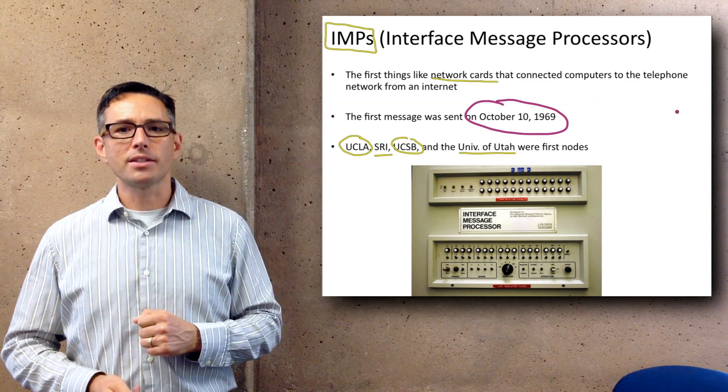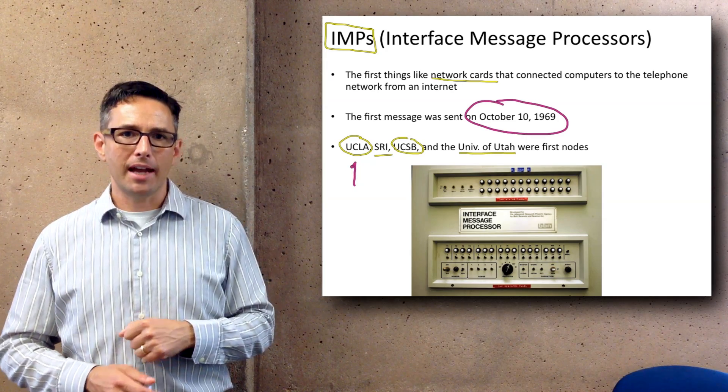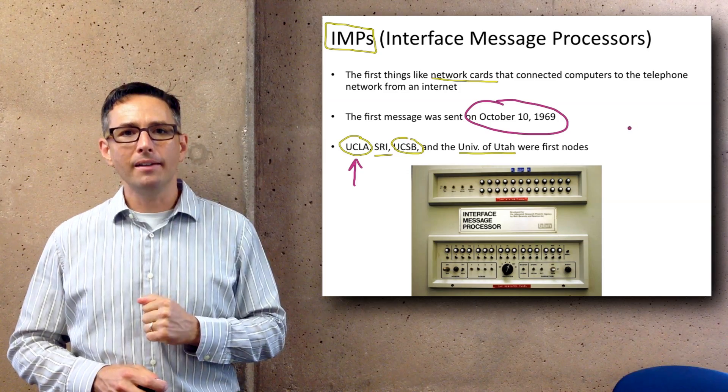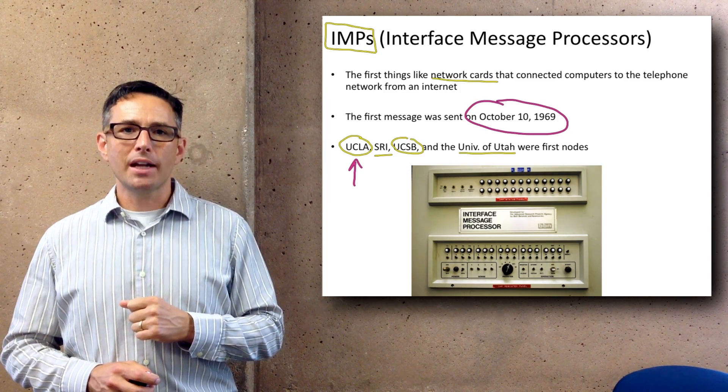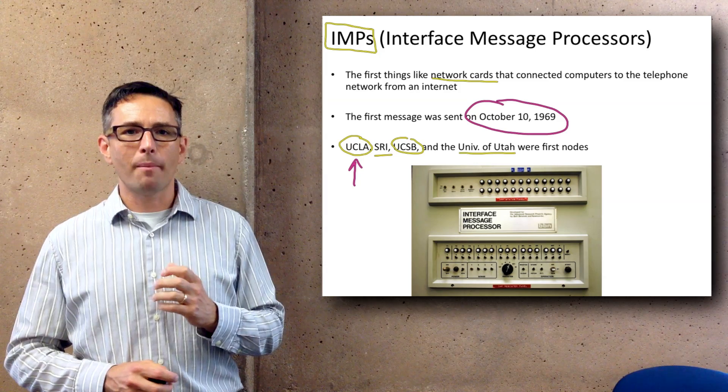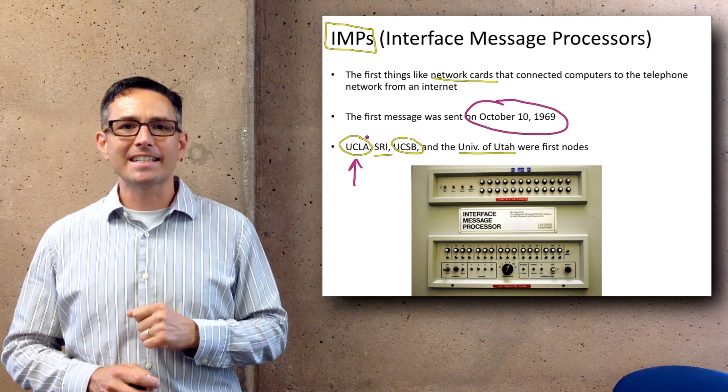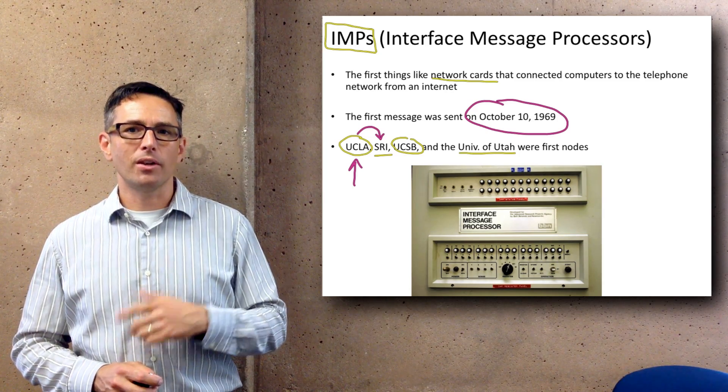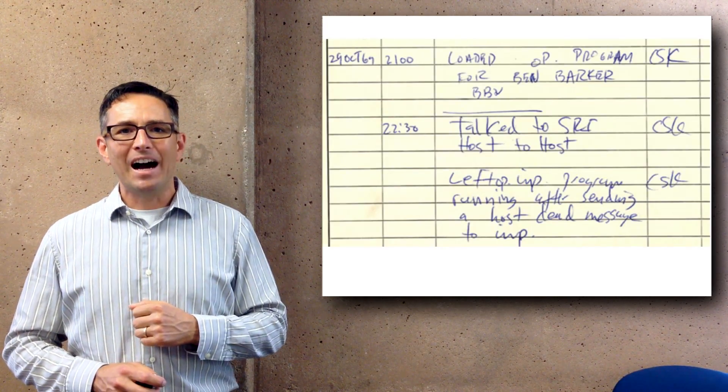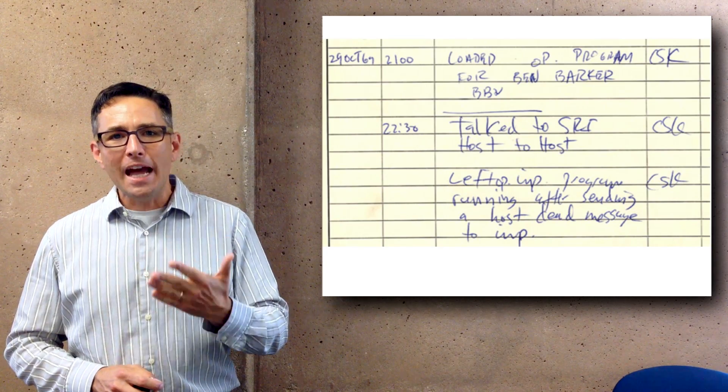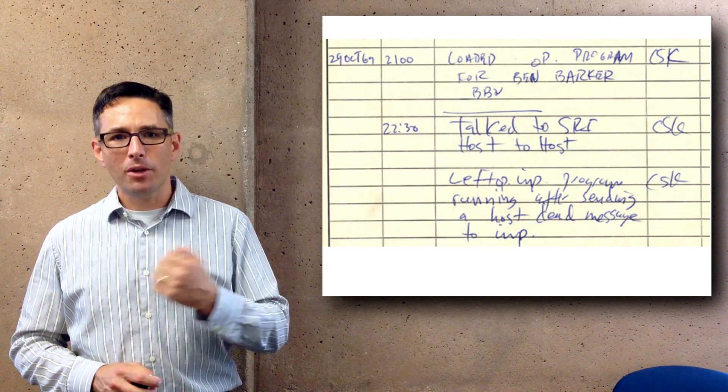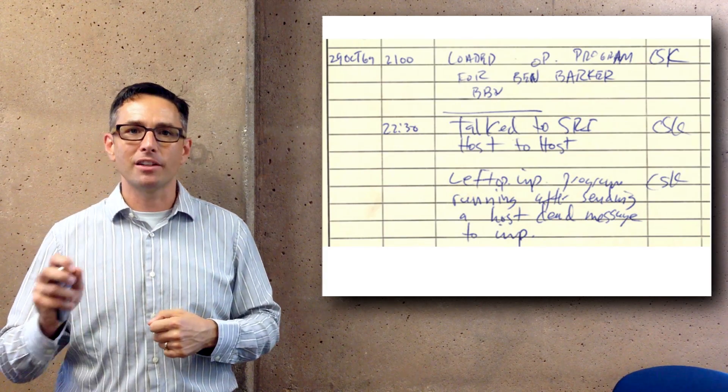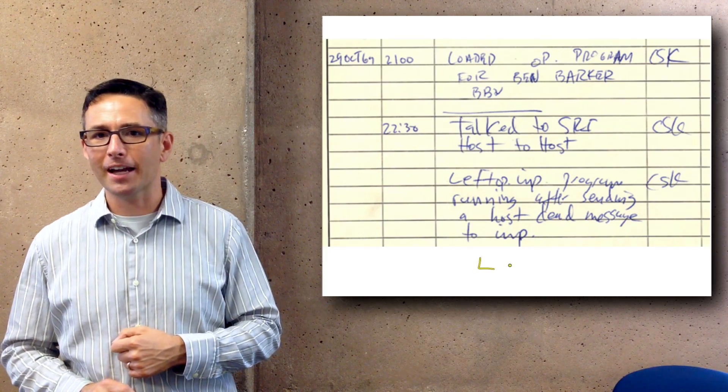That first internet message was sent on October 10th, 1969. It was sent by a UCLA student programmer named Charlie Klein at about 10:30 at night. He transmitted that message from a computer called an SDS Sigma-7, the host computer, and sent it to Stanford's Research Institute in a different SDS computer.